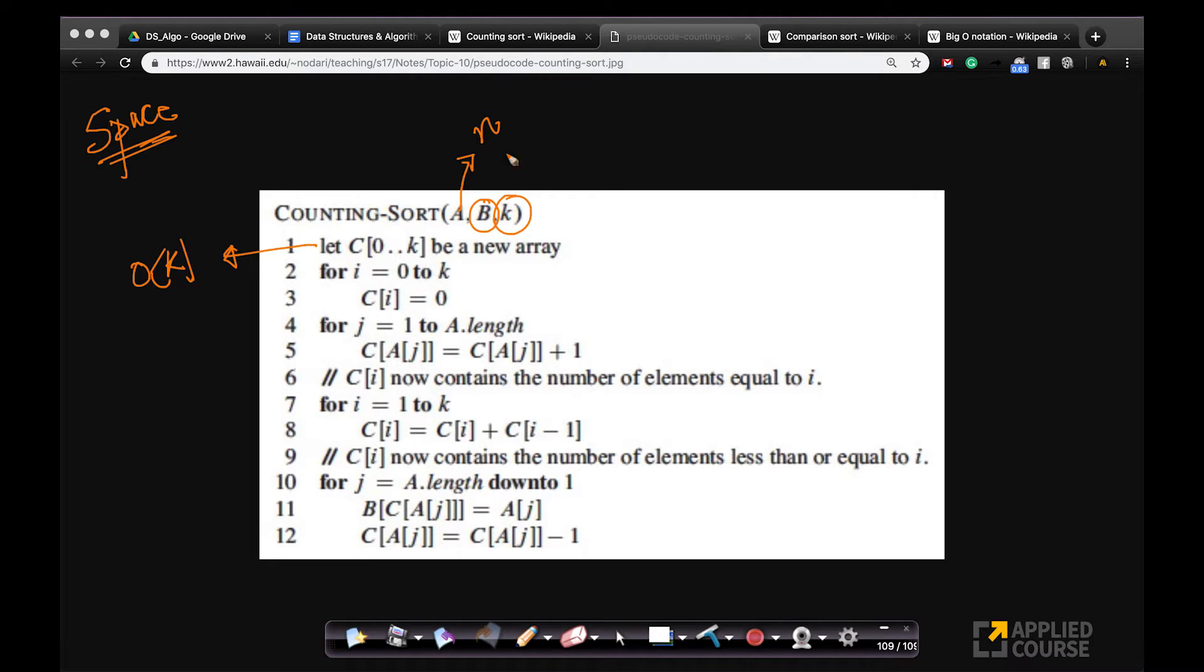If b is already given to you, then you don't have to worry. If b is not given to you, you need to count it also. So b itself, the size of b is order of n, is exactly n actually, because it's the same as the input array. If b is given to you, you need not count. But if b is not initialized and given to you, you have to return b. So the space complexity is often written as order of n plus k. So it is order of n plus k if b is not given to you.